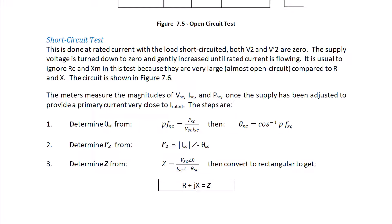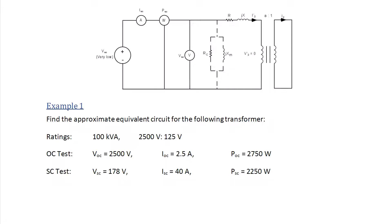The circuit is shown in Figure 7.6, and the following steps are used after finding the magnitudes of VSC, ISC, and PSC. Once the supply has been adjusted to provide a primary current very close to I-rated, the steps are to determine the short-circuit angle PFSC equals PSC over VSC ISC, where theta SC is the arc cosine of the power factor. Determine I2 prime, which is the magnitude of ISC at the angle negative theta SC. And determine Z by using VSC angle zero over ISC angle negative theta SC, and then convert that to rectangular form to get Z equals R plus jX.